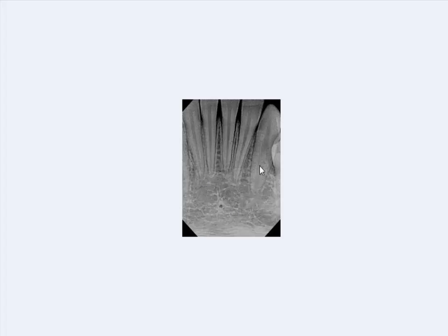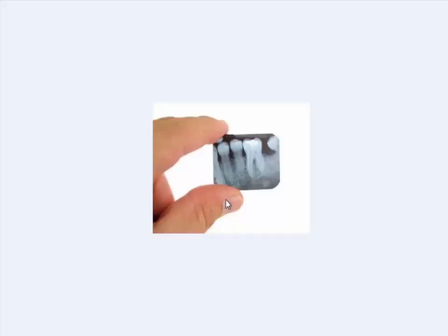This is the mandibular anterior segment showing five teeth. This is the lamina dura. This is the periodontal ligament space. The radiolucent line within the tooth is the root canal space, and this is the trabecular pattern of the mandibular bone. This is another periodontal ligament.